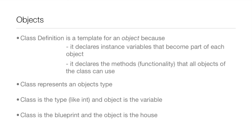The class represents an object's type, so the class is like the type — like an integer — and the object is the variable; you can think of it that way. Another analogy I really like: a guy at Stanford said the class is the blueprint and the object is the house, and I really like that analogy — it really helps you wrap your mind around the whole class and object thing.